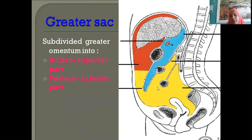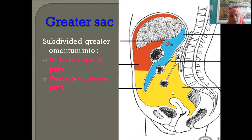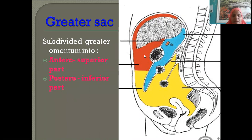The greater sac is subdivided by the greater omentum into two areas: the anterior superior part (also called the supracolic compartment) shown in red, and the posterior inferior part (infracolic compartment). So supracolic and infracolic are the subdivisions of the greater sac.